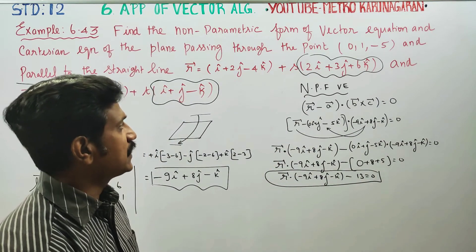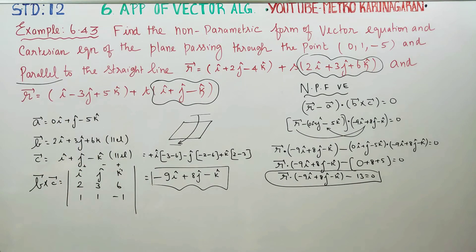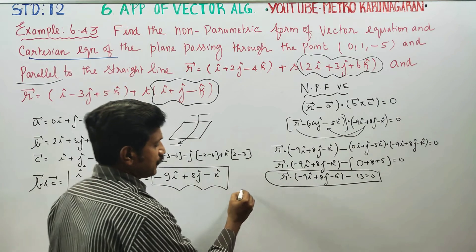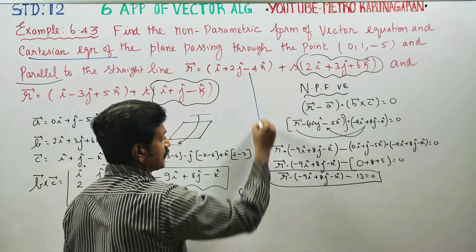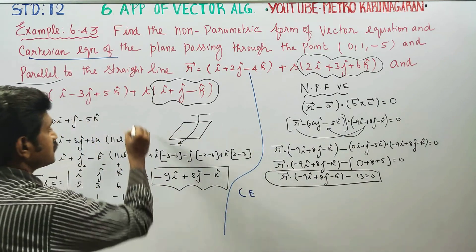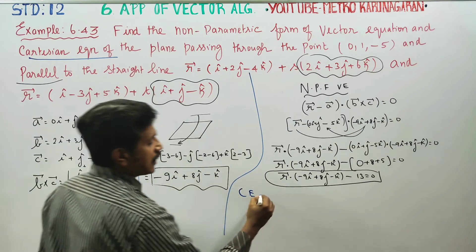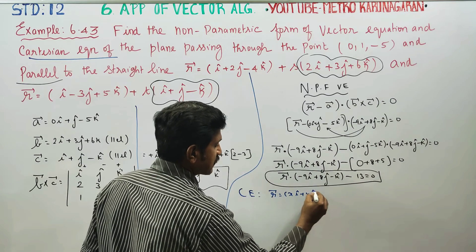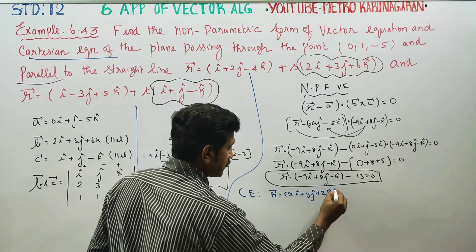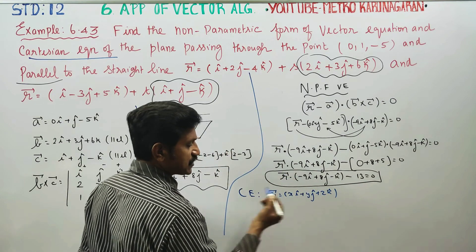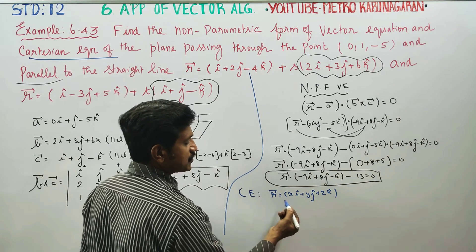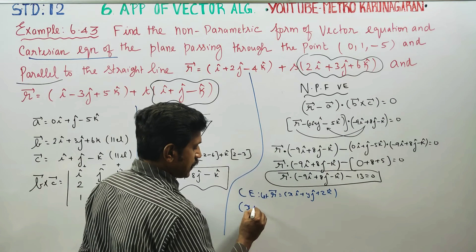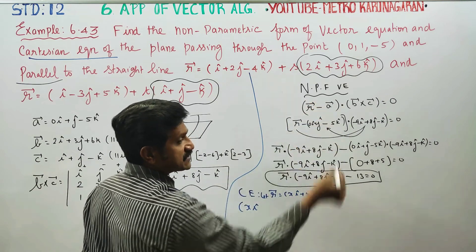Now, from the vector equation, we will find the Cartesian equation. To find the Cartesian equation, let r vector equal the arbitrary vector xi plus yj plus zk. Substitute this into the non-parametric formula. The Cartesian equation is easy to find.